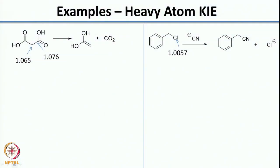Secondary kinetic isotope effects for heavy atoms are very negligible — you would not even see them. So a value in this range corresponds to a primary kinetic isotope effect, abbreviated PKIE.